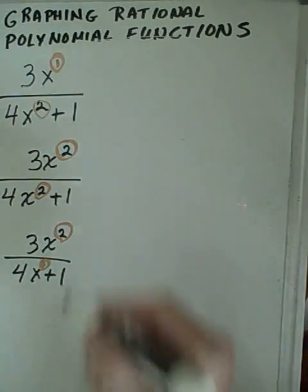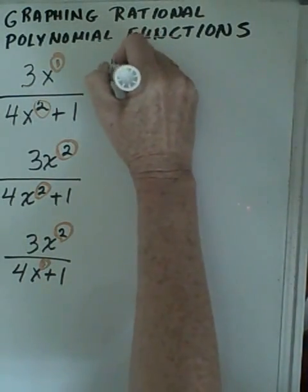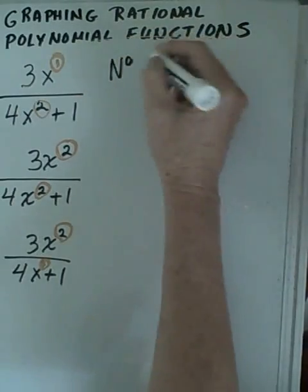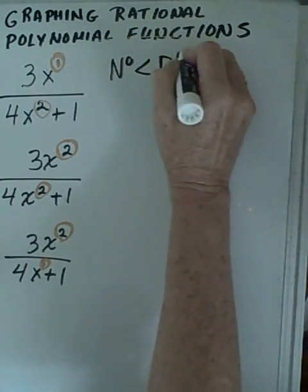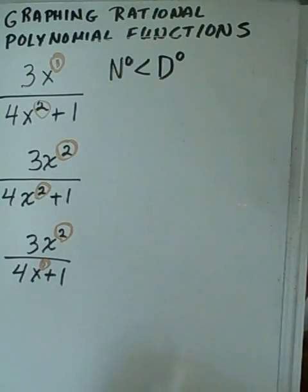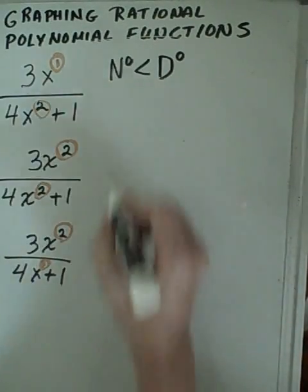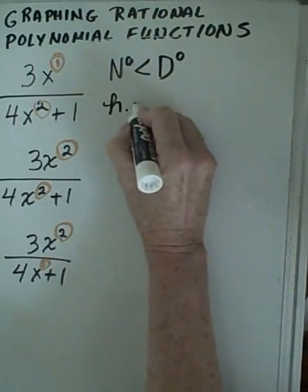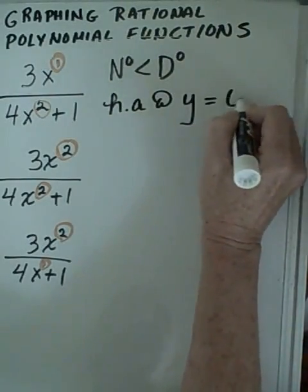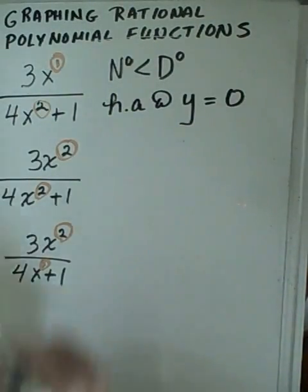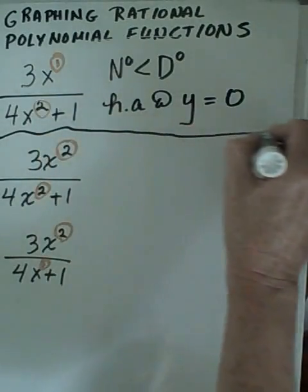In this case, the degree of the numerator is less than the degree of the denominator. This means that there is a horizontal asymptote at y equals zero. So that's our first example.